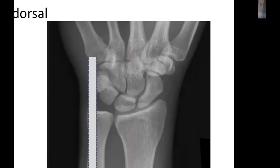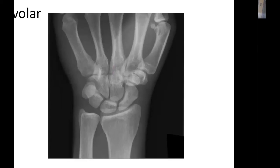On the dorsal side, outside the joint, there is the ECU tendon and the dorsal branch of the ulnar nerve. On the volar side, there is the FCU tendon, the Guyon's canal, and the ulnar nerve.